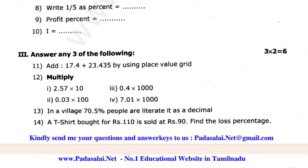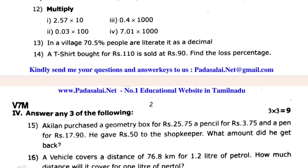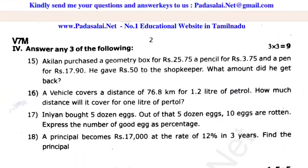Question 14: A teaser bought for rupees 110 is sold at rupees 90. Find the loss percentage. The answer options are: 1) 4.3, 2) 1.5, 3) 2.3, 4) 3.5.